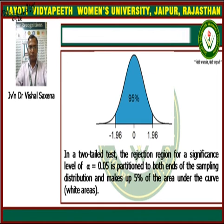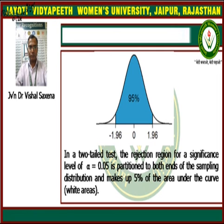A graph is shown for the two-tail test, in which the 95% confidence region is given, with two values: minus 1.96 and plus 1.96. In a two-tail test, the rejection region for the significance level of alpha equal to 0.05 is partitioned to both ends of the sampling distribution, making up 5% of the area under the curve. The shaded white areas on both sides represent the critical regions, which are the rejection areas.